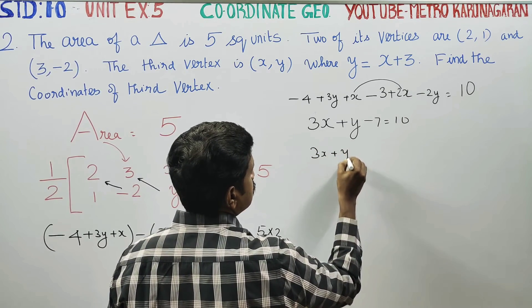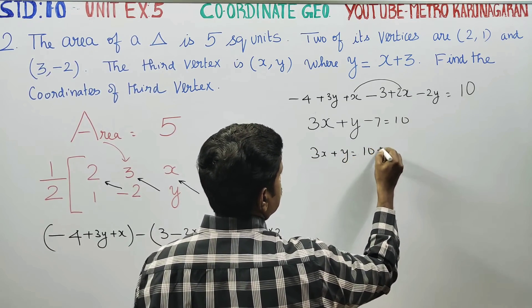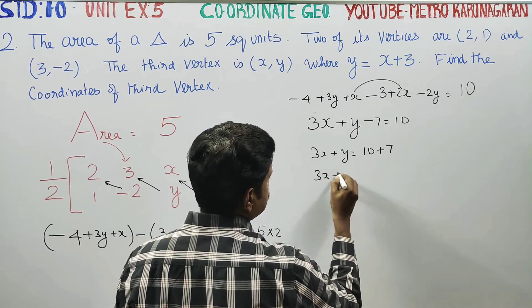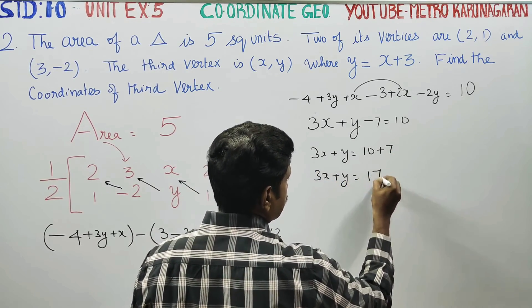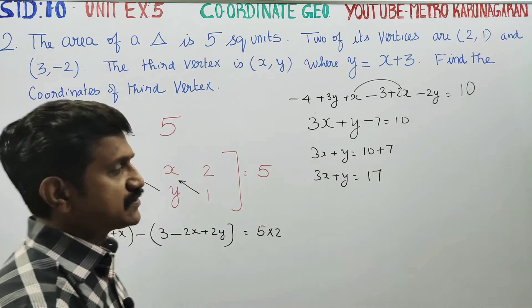3x plus y is equal to 10, move -7 to plus 7. 3x plus y is equal to 17. This is one equation.